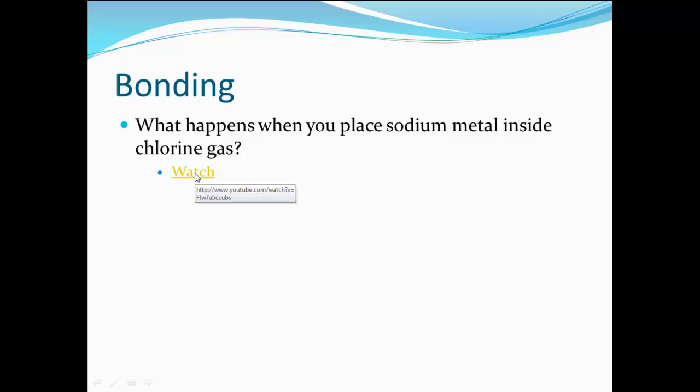Sodium metal is heated until it melts and just begins to burn. Then it is immersed into the yellow green chlorine gas. The sodium begins to burn in chlorine with an intense yellow flame. It produces a white smoke of sodium chloride.